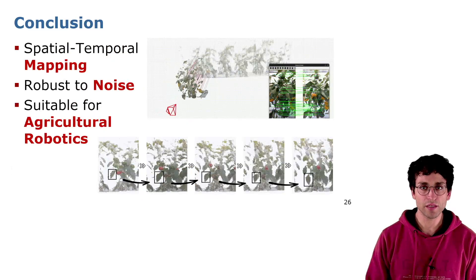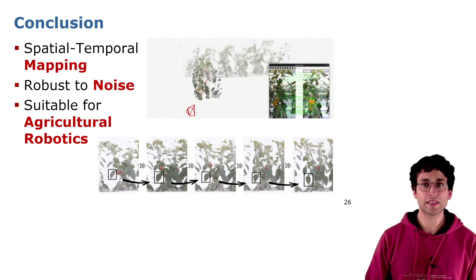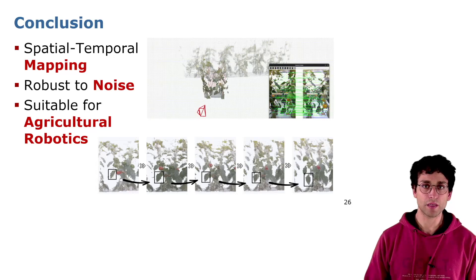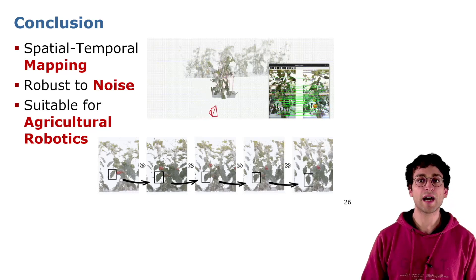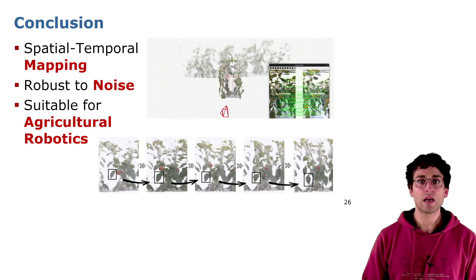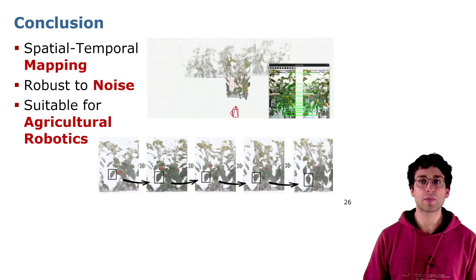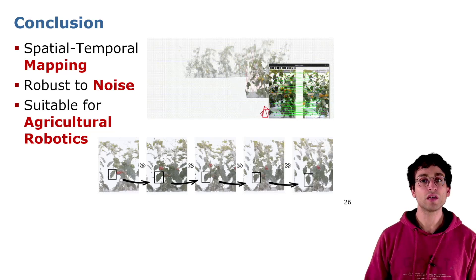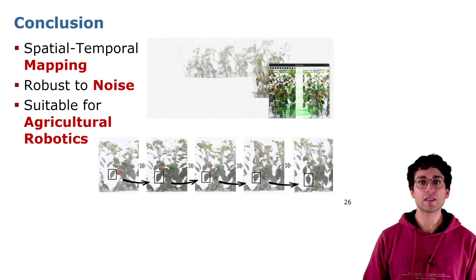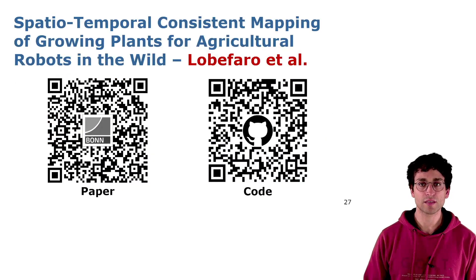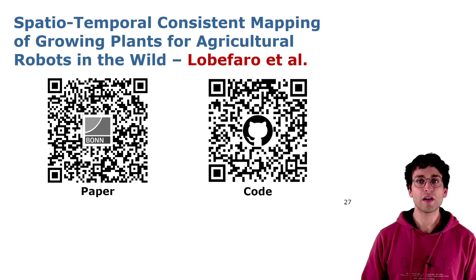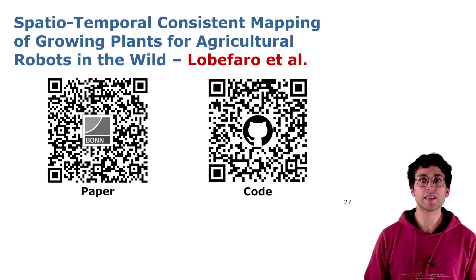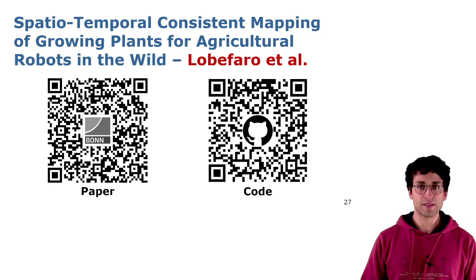In summary, we have developed a robust, cost-effective system for spatiotemporal mapping of growing plants using RGBD cameras. Our approach successfully tracks plant growth and updates a reference 3D model accordingly. We showed through experiments that our system is suitable for agricultural robotics. If you find our work interesting, you can read the details in the paper or look at our GitHub repository that contains the open source code with all the new updates.